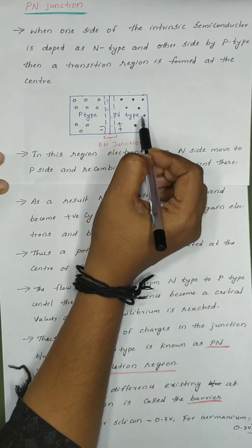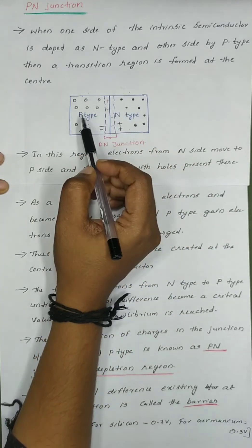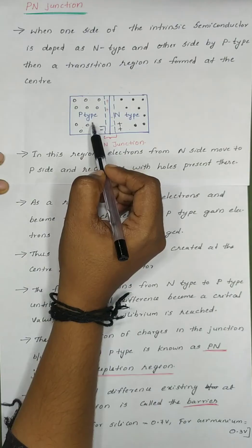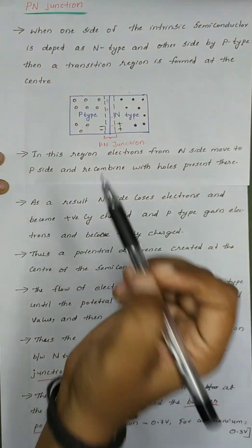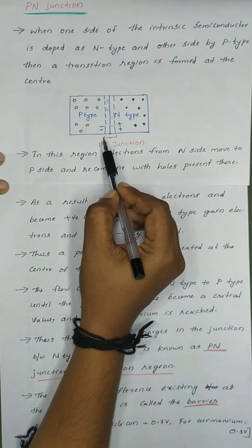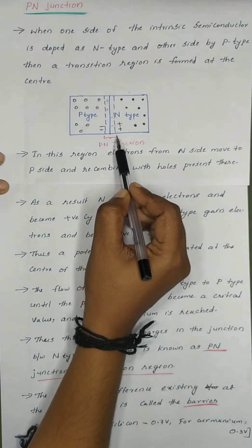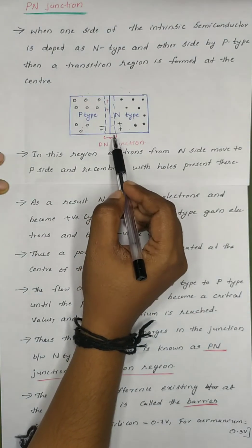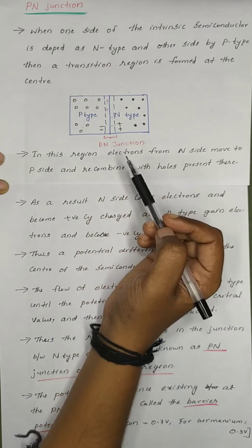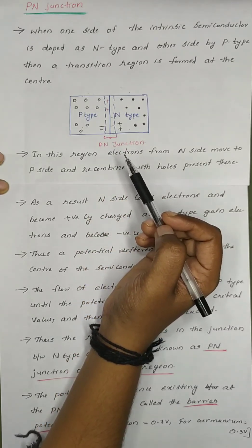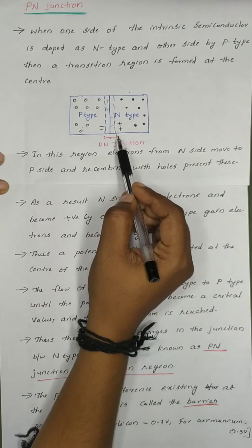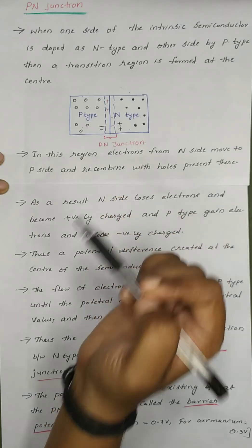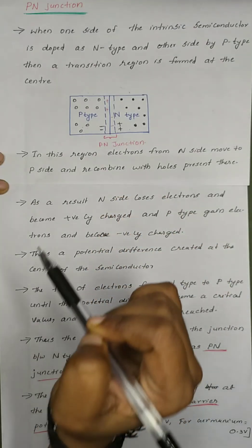N-type semiconductors become positively charged, and P-type semiconductors become negatively charged. So now, there is a potential barrier at this junction. We call that the potential barrier at the P-N junction.